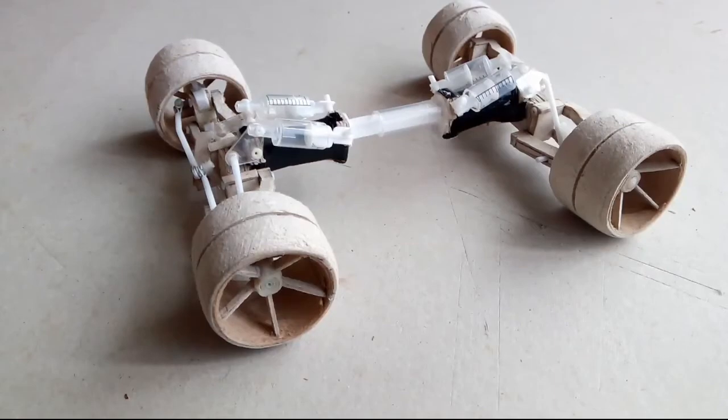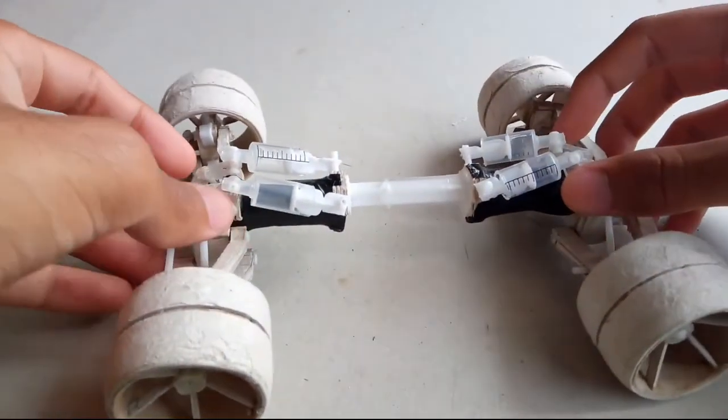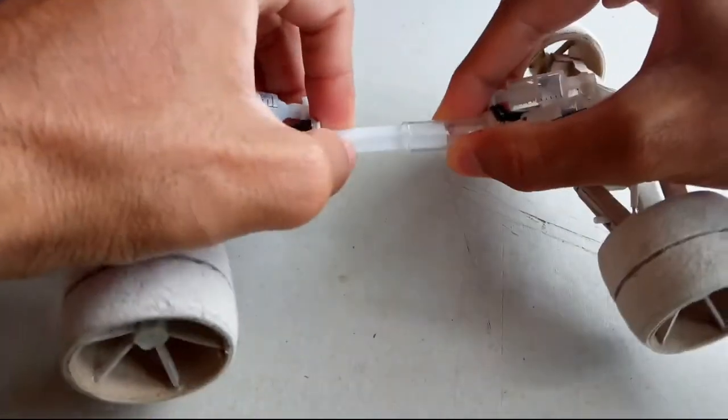Now all that's left is to join the front to the rear and for that I used another syringe because it's going to let me adjust the length of the wheelbase.